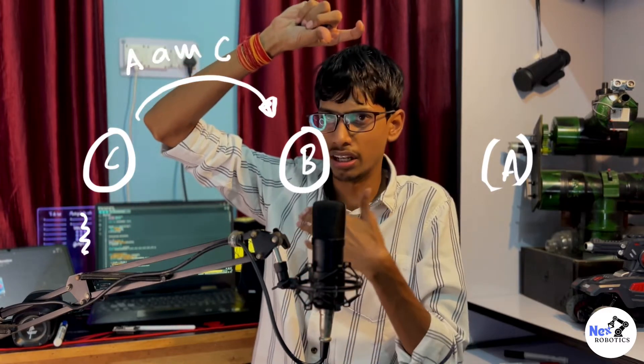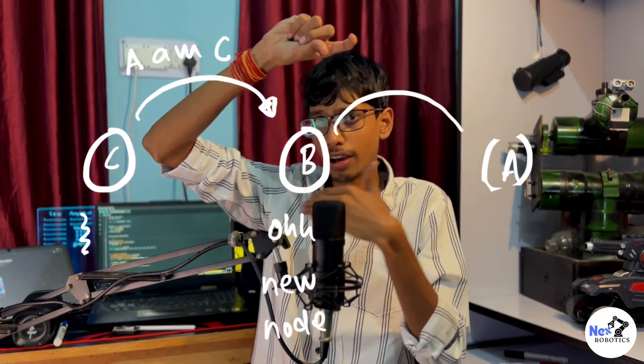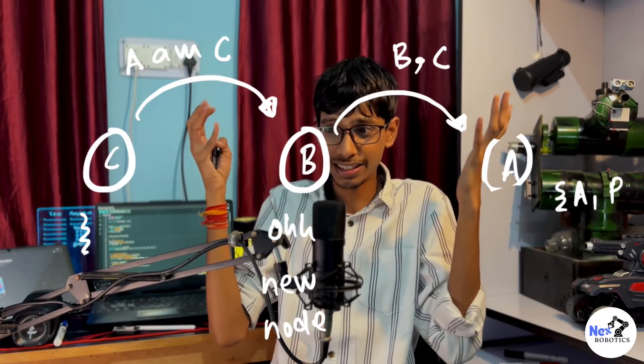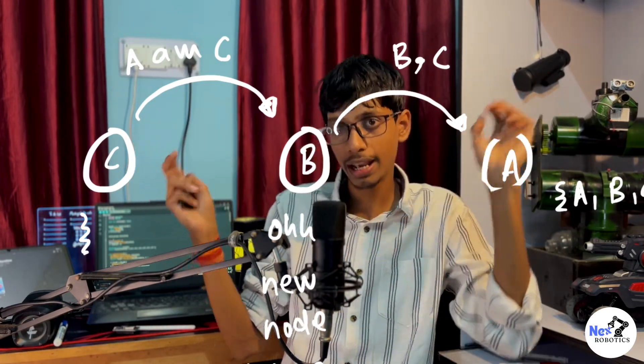Same thing, C node will send its address to B, and B node thinks the same—oh this is a new node, I should send this to everyone else. So it will send this to A. And just like that, three of them know each other, including A and C. And I hope it's making sense and it works because it's 1 a.m. in the morning.